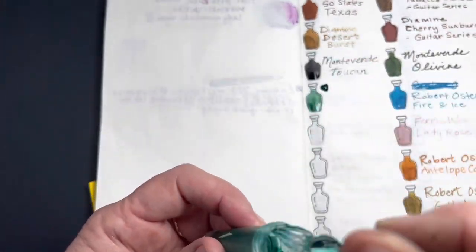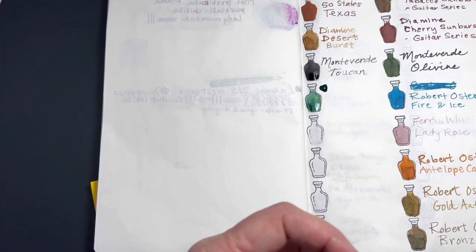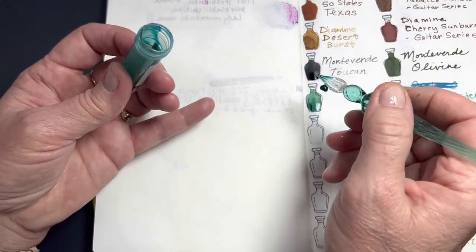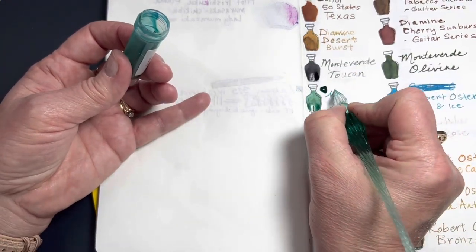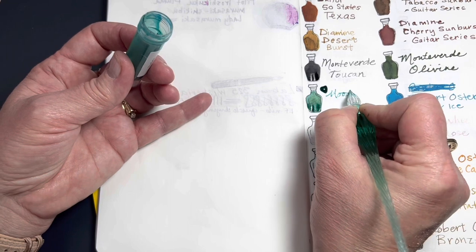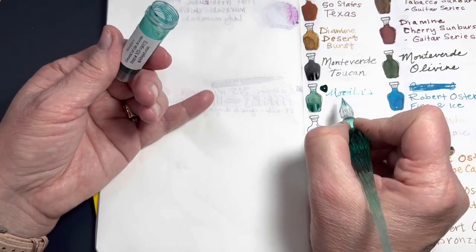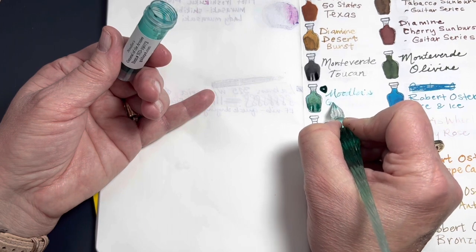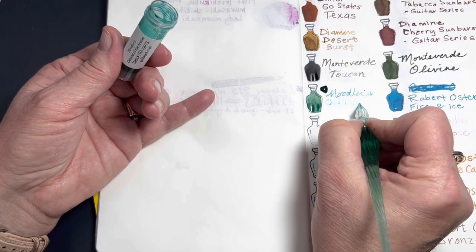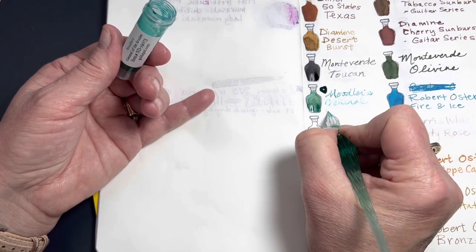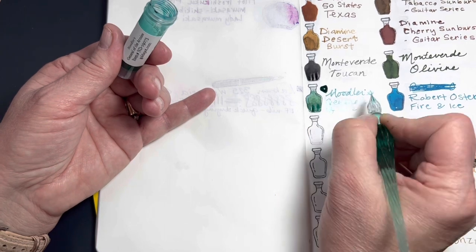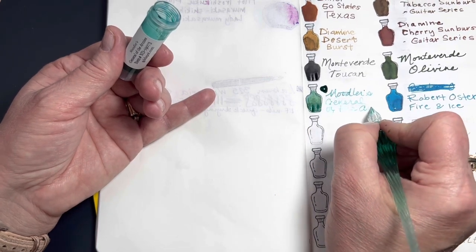I have several, ooh, that's pretty. I have several Noodler's inks, but not this one. General of the Armies. Nice. Oh, goodness. I just had a bubble. We'll leave that there. Oh, do you hear that lightning thunder? Do you hear the lightning? Do you hear that thunder outside that's coming along with my lightning?